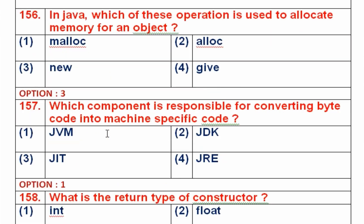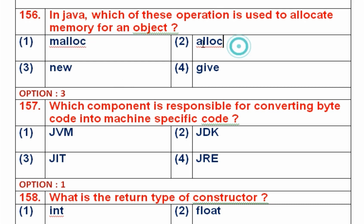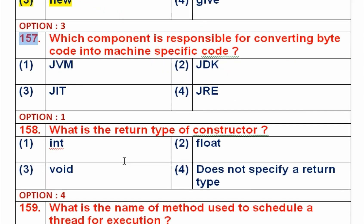Question number 156: In Java, which operator is used to allocate memory for an object? Option 1 is malloc, option 2 is alloc, option 3 is new, option 4 is queue. Malloc is a dynamic memory allocation function in C and is not available in Java. In Java, new is the operator used to allocate memory when an object is created. So option 3, new, is the right answer.